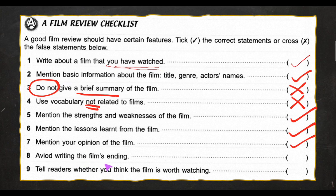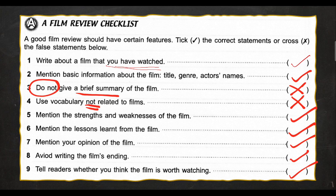Number eight: avoid writing the film's ending. There is an argument about this — you can write the ending, no problem, but it shouldn't be in detail. I will accept the ending. Number nine: tell readers whether you think the film is worth watching. This one is also true — you have to tell your readers patut tak tengok movie ni, ataupun jangan pergi tengok. That is what a review is about.